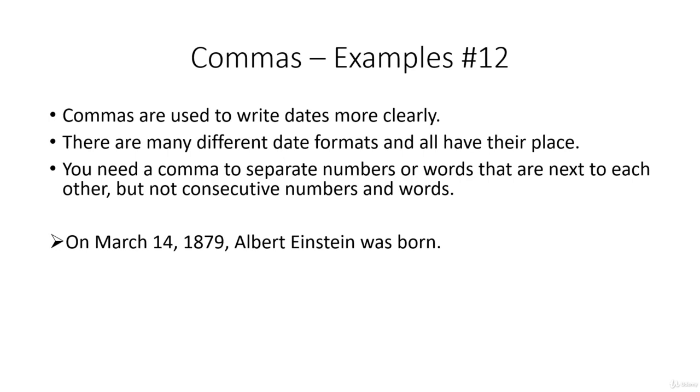On March the 14th, 1879, Albert Einstein was born. So we have two commas here. On March the 14th, 1879, so we have two numbers next to each other, namely the 14 and the 1879. They are separated by a comma. The second comma is because the on March the 14th, 1879 acts as an introductory phrase, which is separated by a comma from the rest of the sentence.